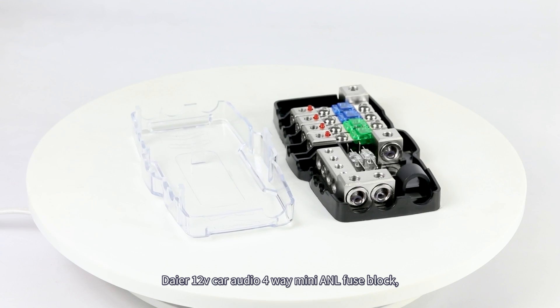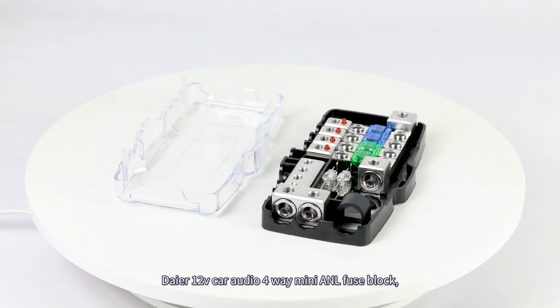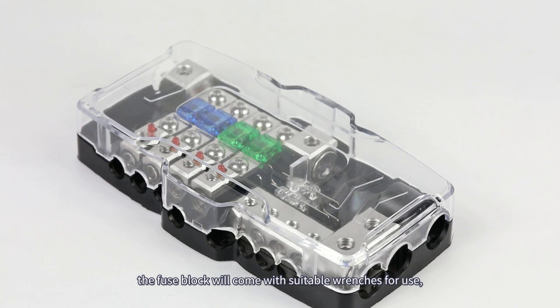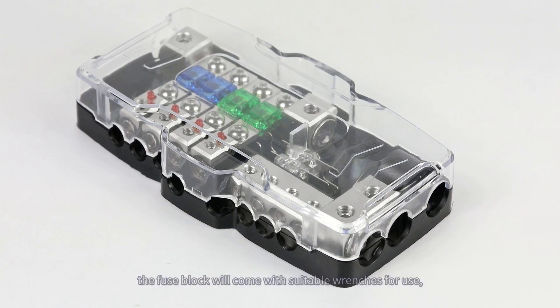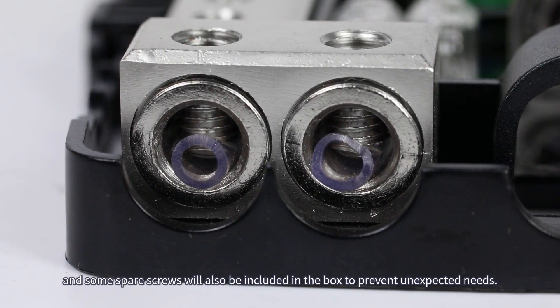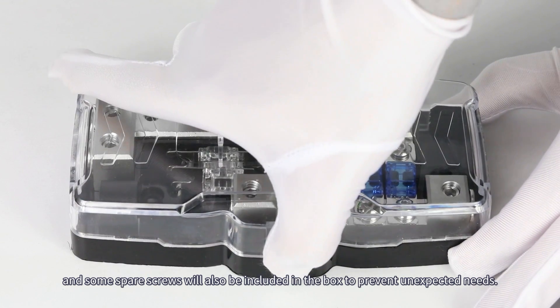Dare 12 Votcar Audio 4-Way Mini ANL Fused Block. The fused block will come with suitable wrenches for use, and some spare screws will also be included in the box to prevent unexpected needs.